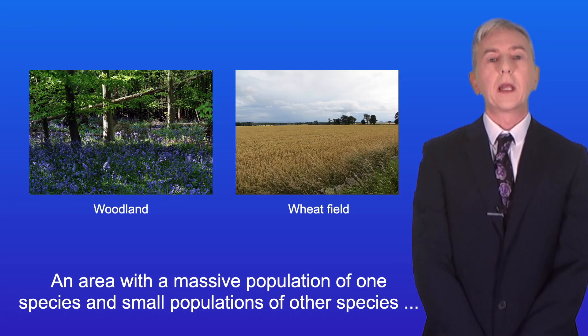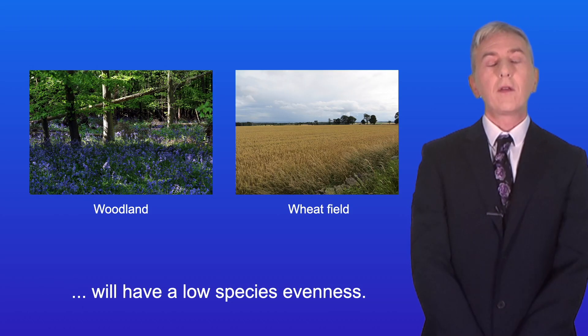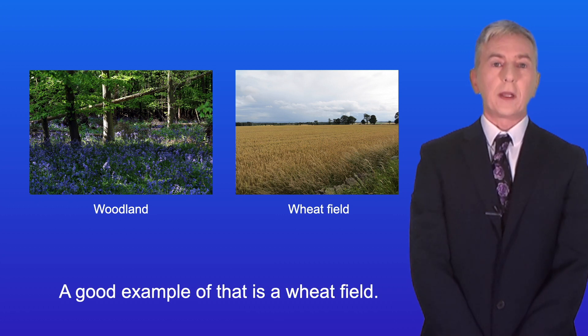An area with a massive population of one species and small populations of other species will have a low species evenness. A good example of that is a wheat field.